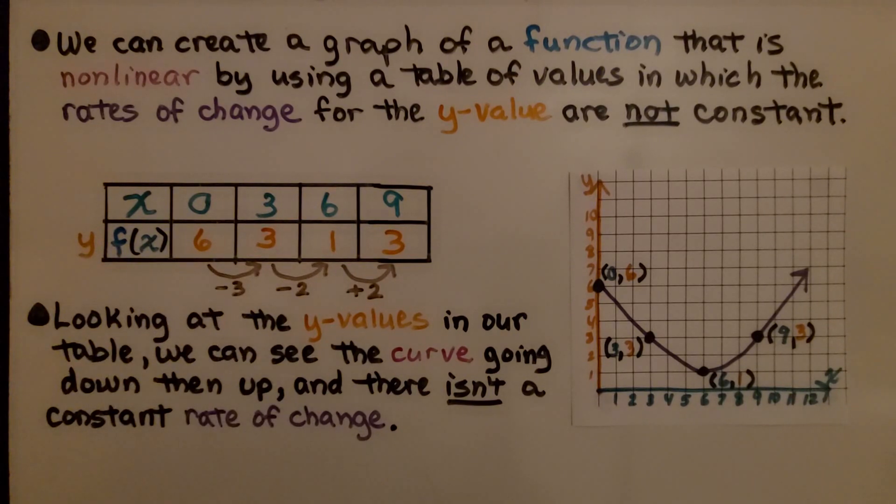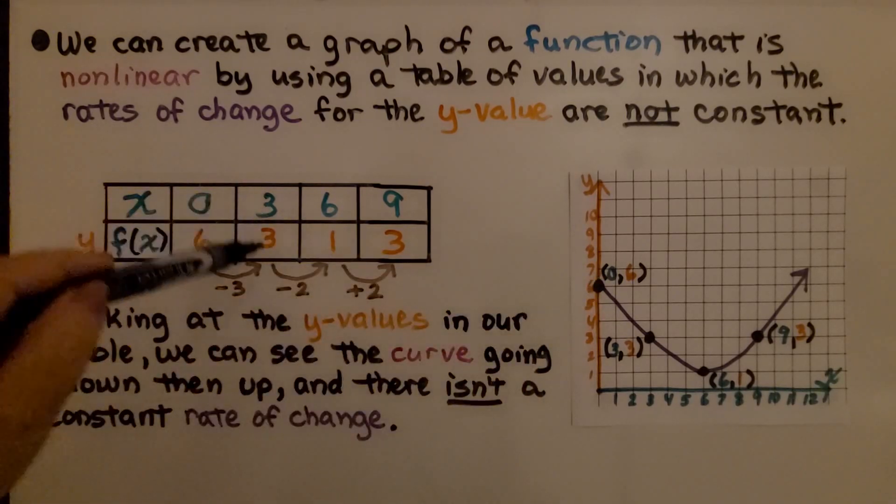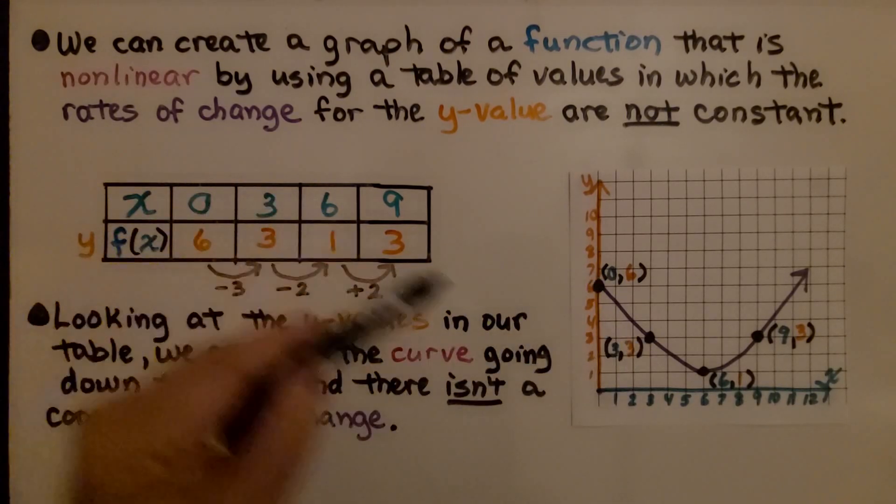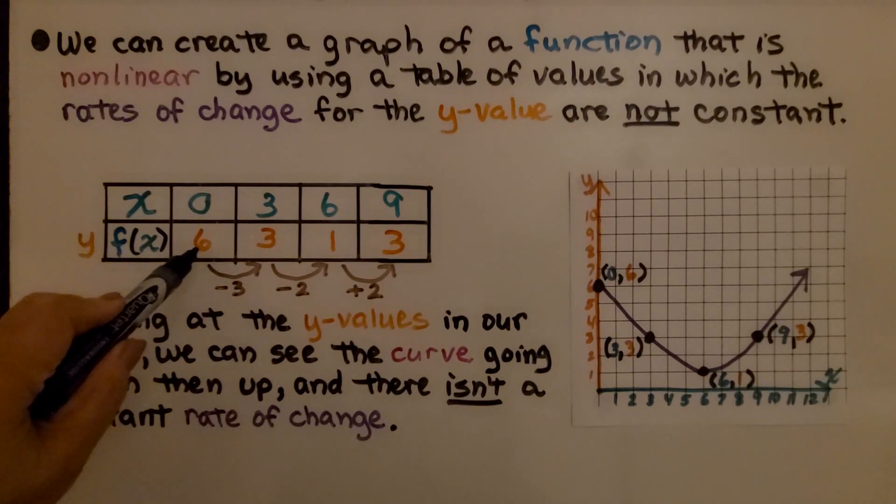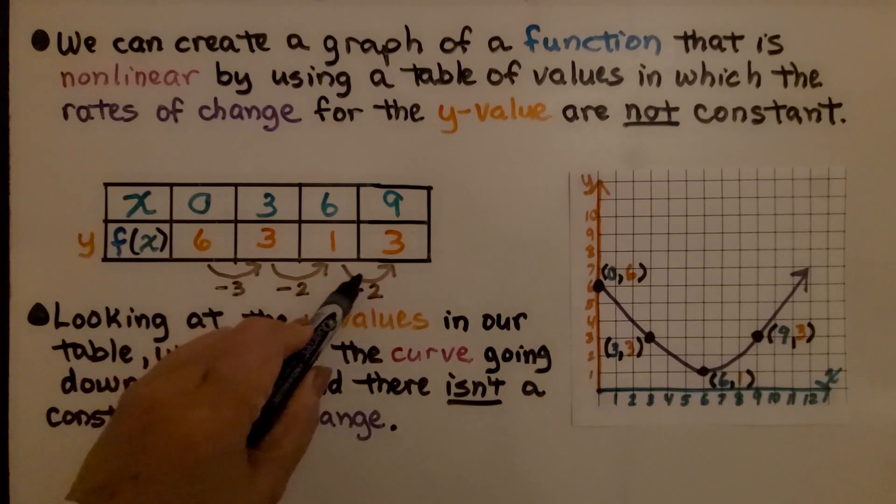There isn't a constant rate of change. When we plot these points, zero six, three three, six one, nine three, we can see it makes a curve. This is nonlinear. But we can see it's nonlinear from the table. We can see it's making a curve. It's going down three, down two, plus two, so it's going down and then up.